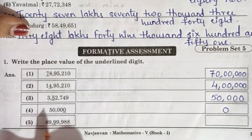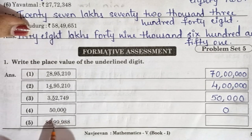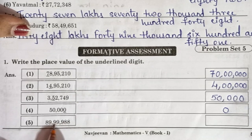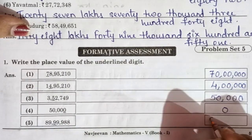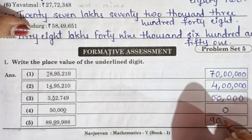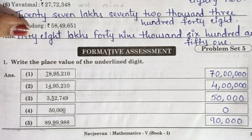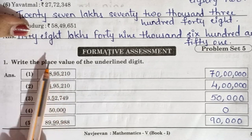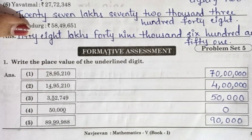Fifth number is 89,99,988. Units, tens, hundreds, thousands, ten-thousands — 9 is at ten-thousands place. So first write 9, then thousands place zero with comma, hundreds place zero, tens place zero, and units place zero. So the place value is 90,000. Is that clear? In this way students you are supposed to solve question number 1 — write the place value of the underlined digits.